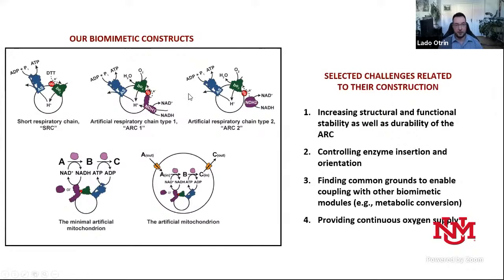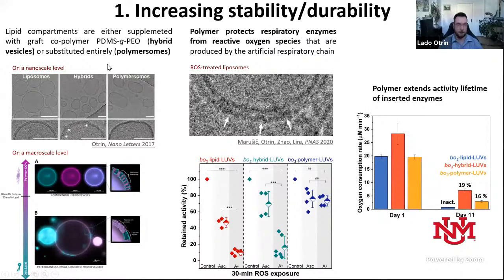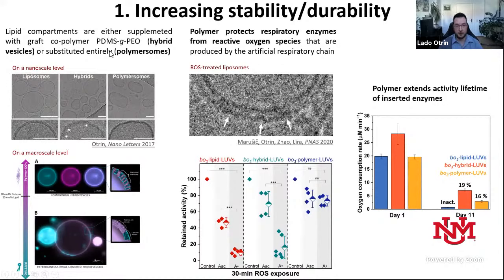To increase functional durability and stability, we supplement lipid vesicles with polymer — in our case, a graft copolymer PD-Mesh GPO — to form hybrid vesicles. These vesicles offer advantages: specific lipids required by some proteins can be accommodated, and once proteins are inserted in hybrid vesicles, the permeability of the membrane decreases, which is extremely beneficial. We also replace lipid membranes entirely with polymer membranes. From cryo-EM images, membrane thickness and fluidity are very similar, so we postulated that membrane proteins would behave in a similar, highly active fashion.